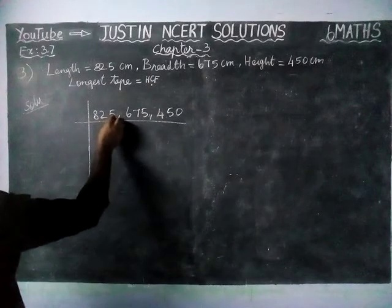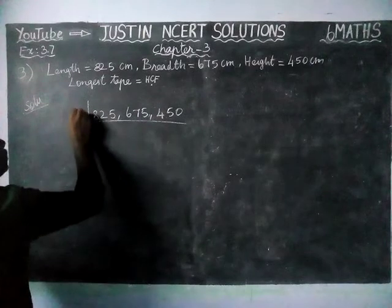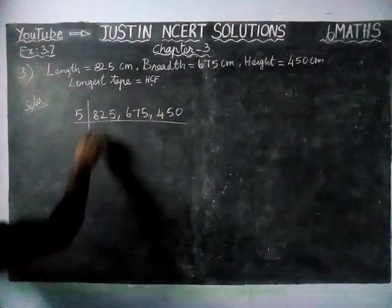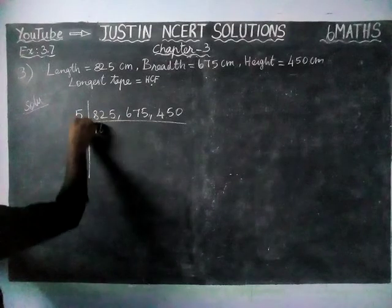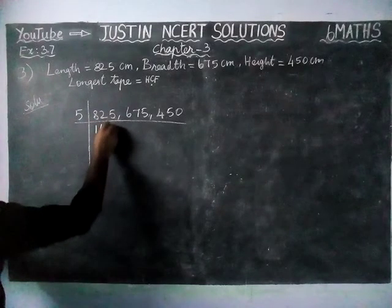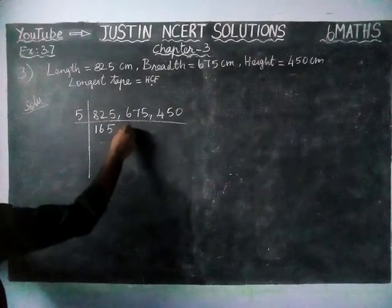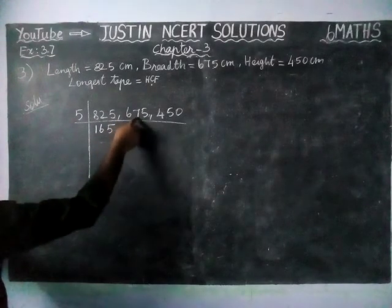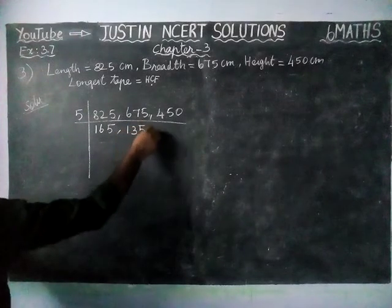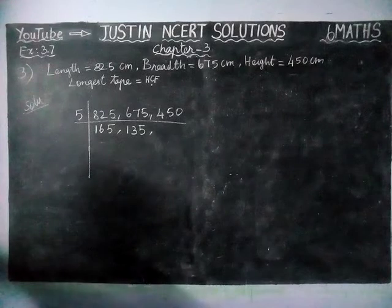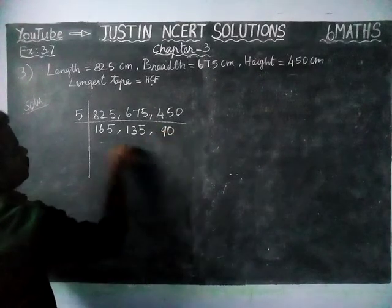The ones digits are 5, 5, 5. So according to the divisibility rule for 5, we can divide all three by 5. For 825: 1 five in 8, remaining 3; in 32, 6 fives are 30, remaining 2; in 25, 5 fives are 25. For 675: 1 five in 6, remaining 1; in 17, 3 fives are 15, remaining 2; in 25, 5 fives are 25. For 450: in 45, 9 fives are 45; bring down 0, giving 90.